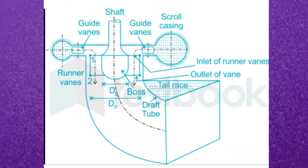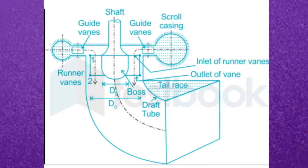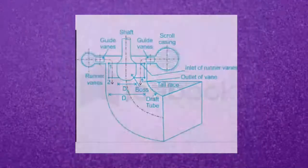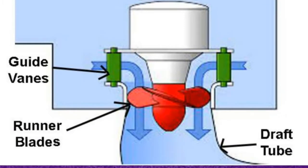Water from the penstock enters the scroll casing, which is shown on both sides of the diagram. The water then moves to the guide vanes, which are stationary vanes. From the guide vanes, the water turns through 90 degrees and flows axially through the runner, meaning the flow of water is parallel to the axis of the shaft.